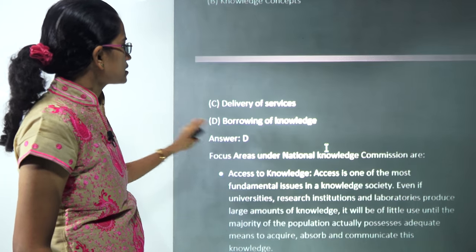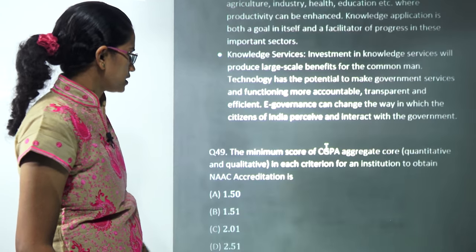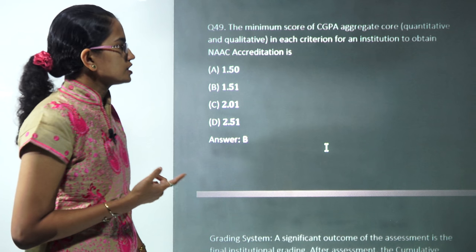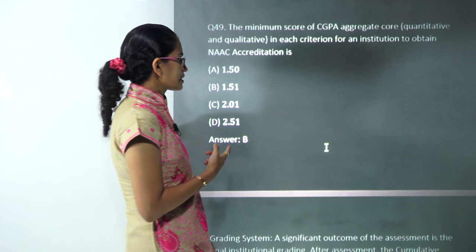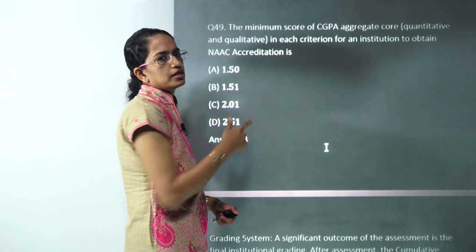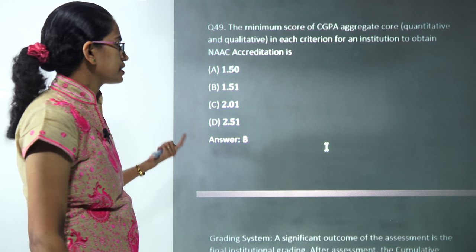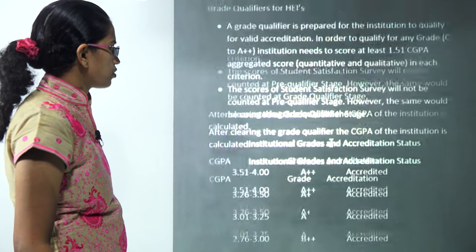The next is the minimum CGPA in each criteria for an institution to obtain accreditation. The minimum CGPA is 1.51. Less than that, the institution would not be accredited under NAAC, so B is the correct option. That's the grading criteria, very important question.